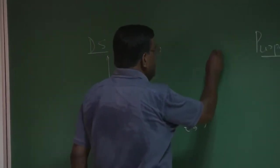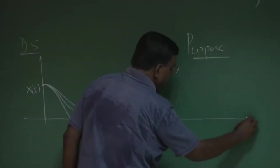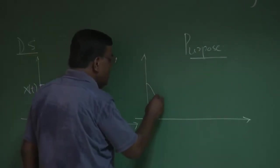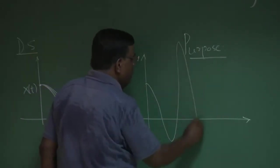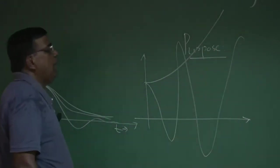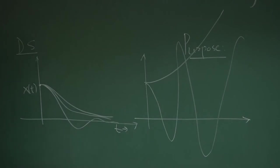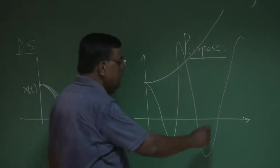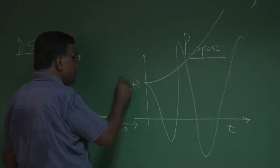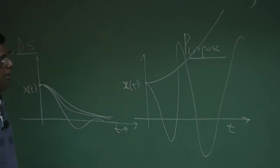If a system is dynamically unstable, then after a disturbance is given, the disturbed motion may diverge in various ways. All such cases represent a dynamically unstable system, because in finite time the disturbed motion variable is not coming back to the equilibrium.